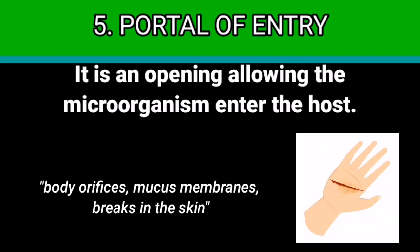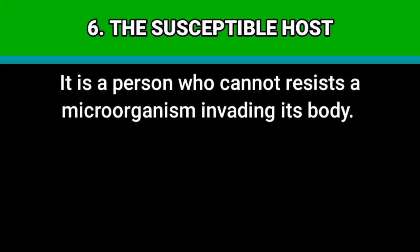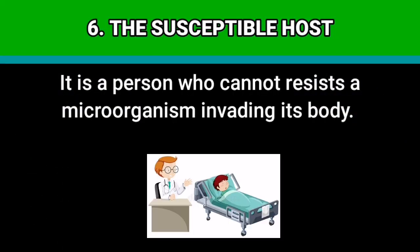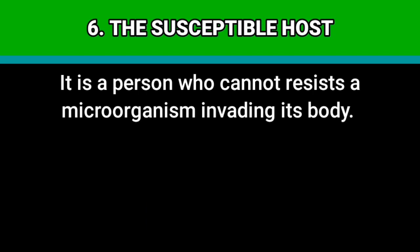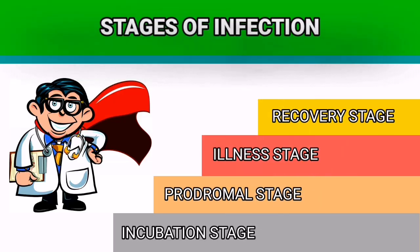Number five, portal of entry: it is an opening allowing the microorganism to enter the host body — body orifices, mucous membranes, breaks in the skin. Number six, the susceptible host: it is a person who cannot resist a microorganism invading its body.